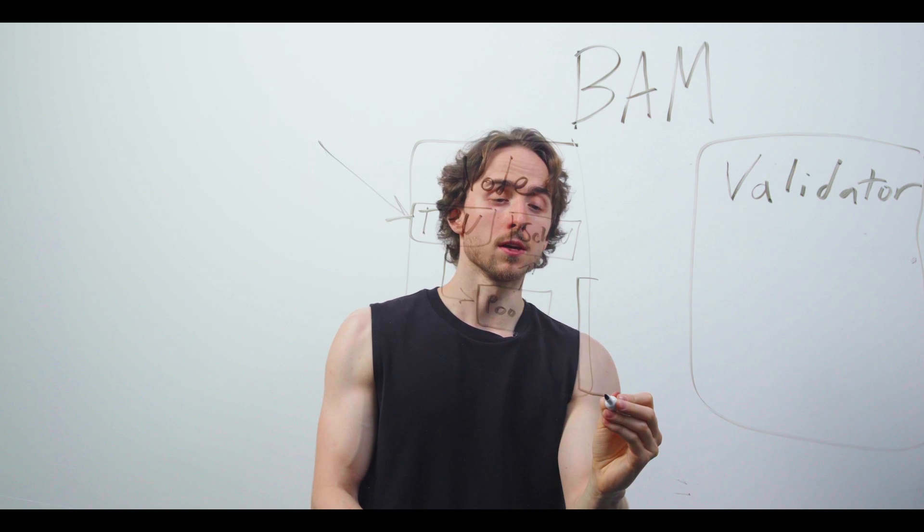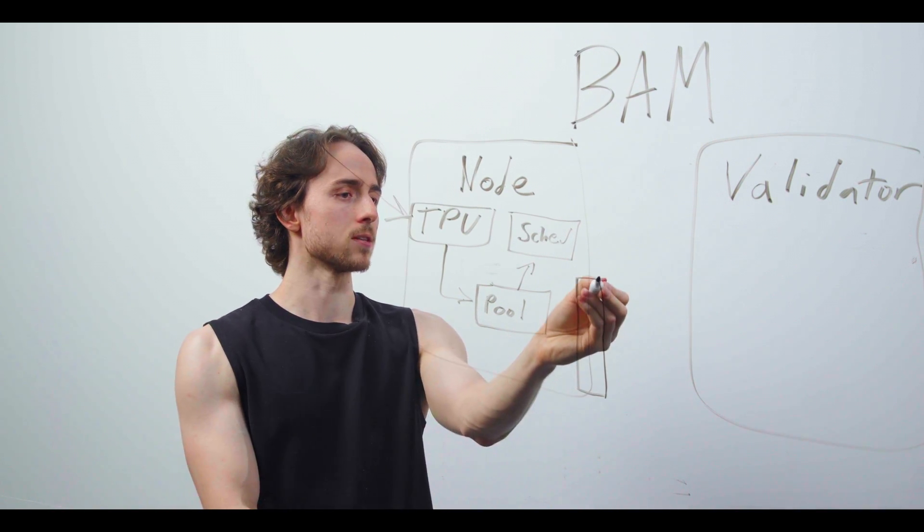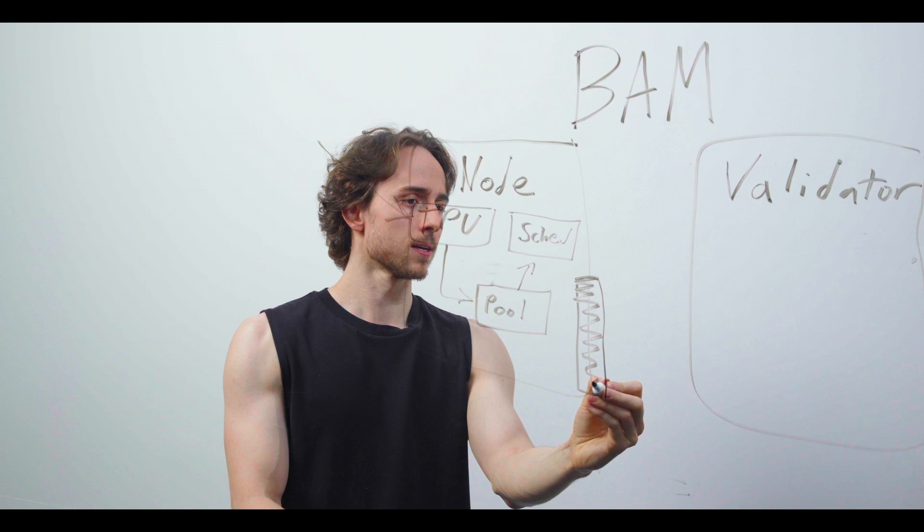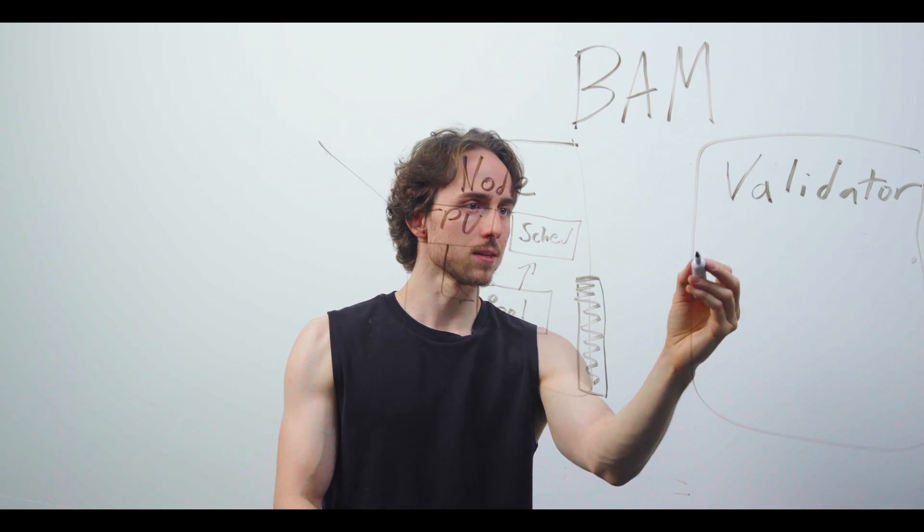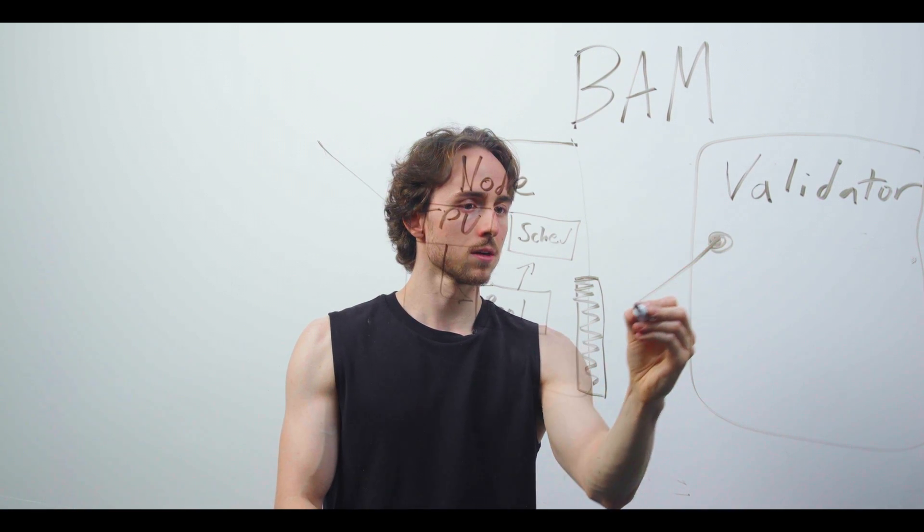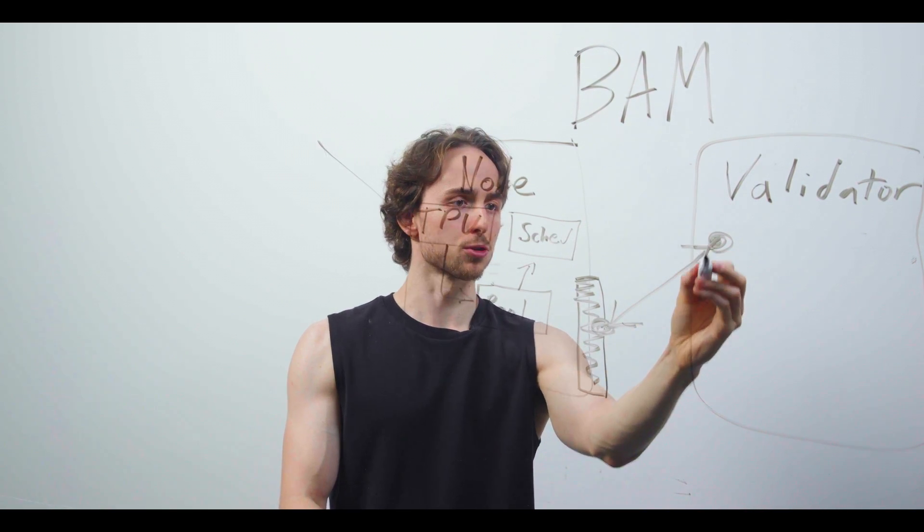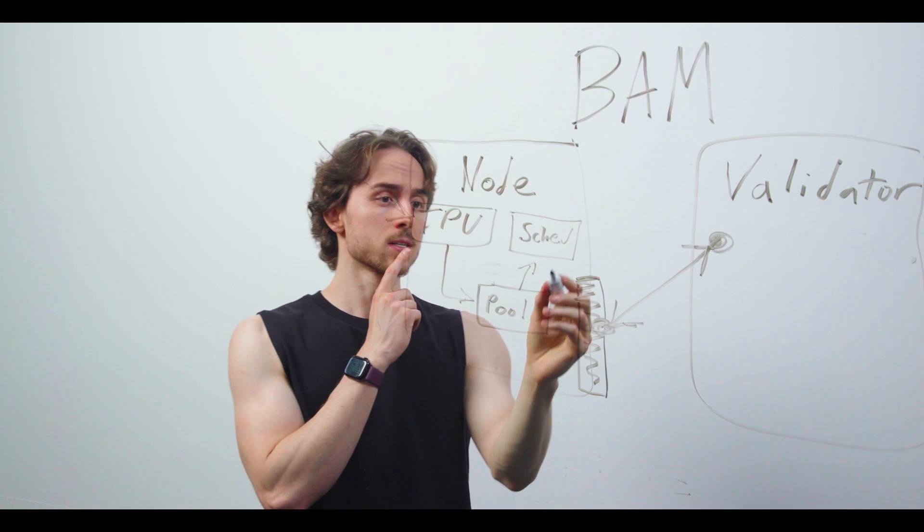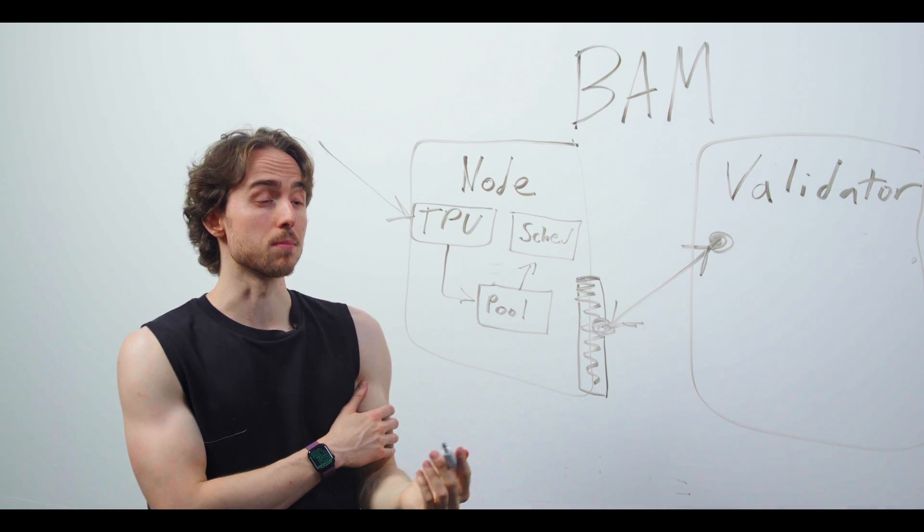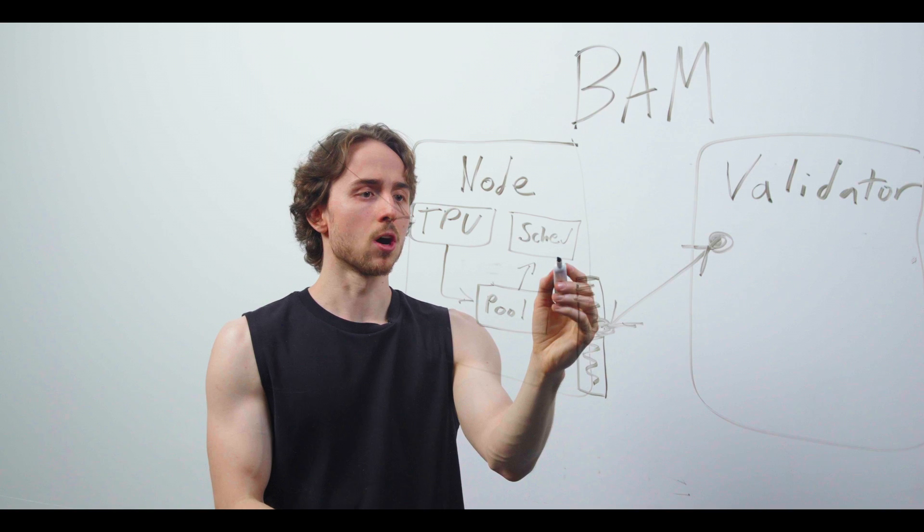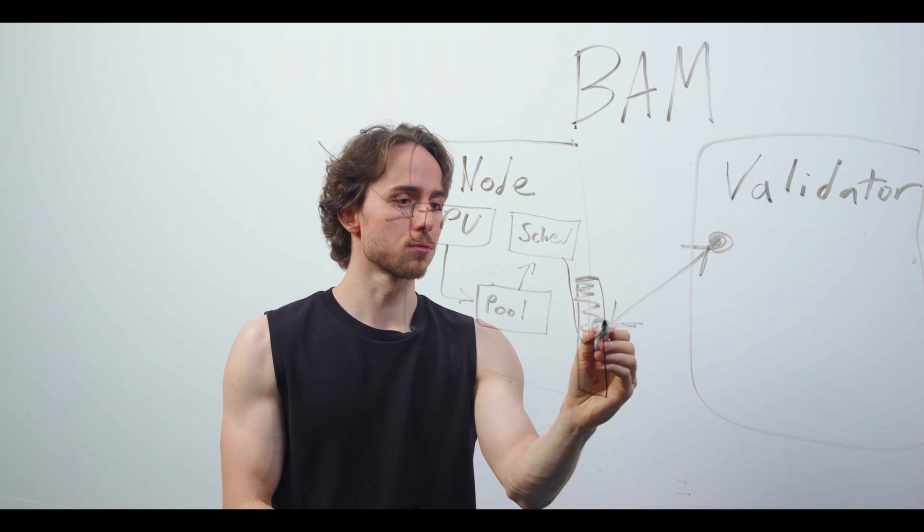The node also maintains a server that allows the validator to connect to and opens a bi-directional stream. Selected transactions and necessary metadata messages are then sent through this bi-directional stream to the validator.